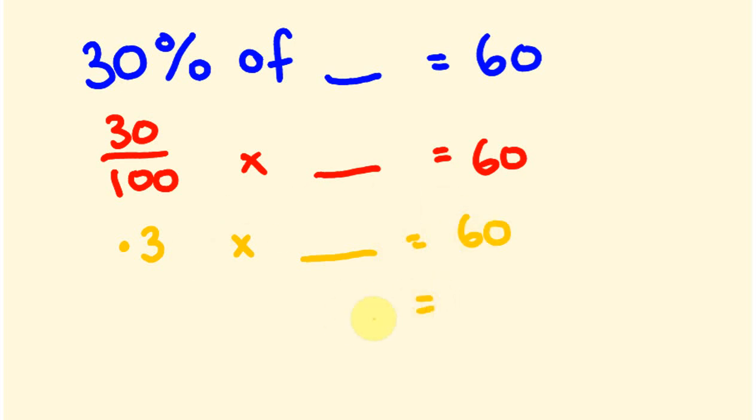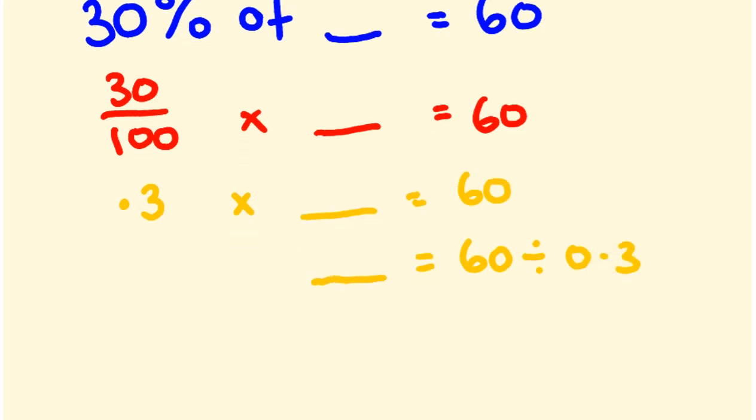Okay, so if we do this, we're going to end up with this unknown number and we're going to get 60 and we're going to divide it by 0.3. Okay, and if we do this, if we're going to go 60 divided by 0.3, the answer you're going to get is going to be 200.